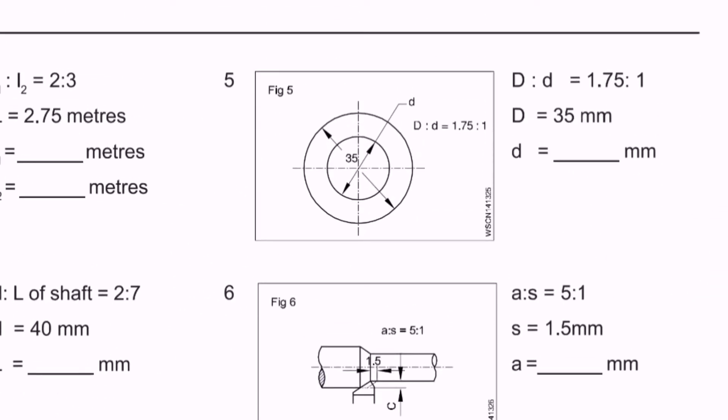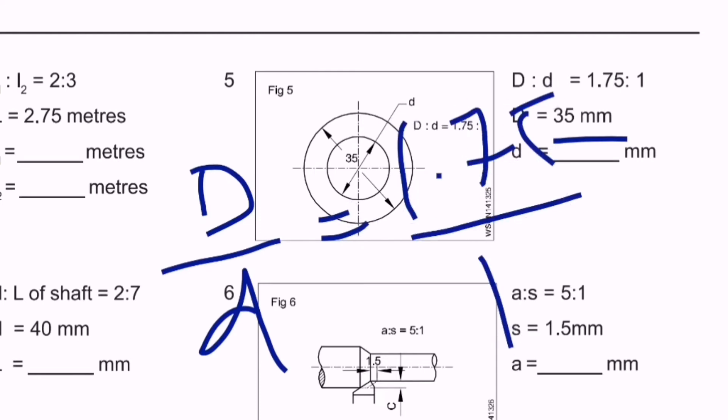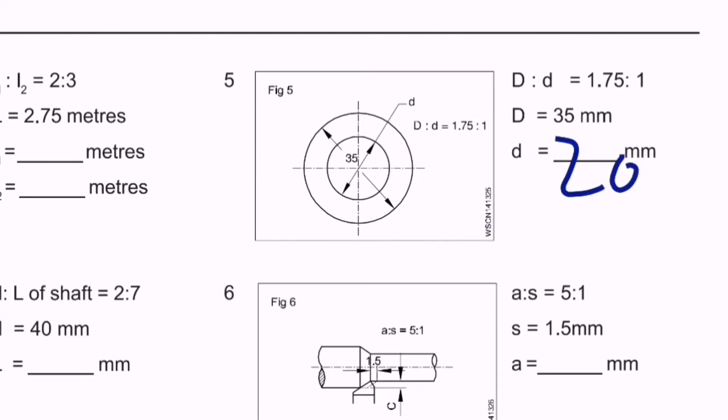Question number five: there is a circle where diameter ratio equals 1.75:1. The bigger diameter is 35mm, we need to find the smaller diameter. D/d equals 1.75/1. The bigger diameter is 35, so 35 divided by 1.75 equals 20mm.